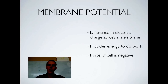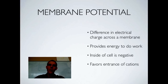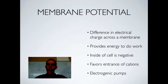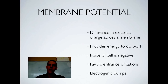Your body can use that difference in charge — positive and negative — to make work happen; it provides energy to do work. In general, the inside of the cell is negative, which means cations want to enter because positive and negative attract. This membrane potential is maintained using electrogenic pumps — a form of active transport pumps that pump ions to one side or the other depending on what the body needs in terms of electrical charge.